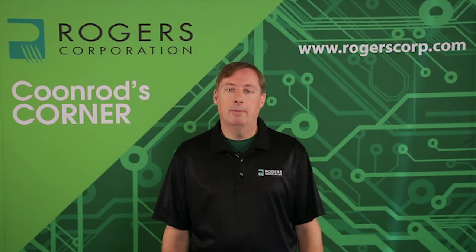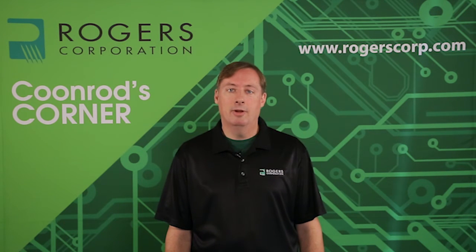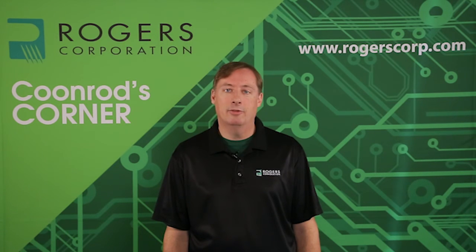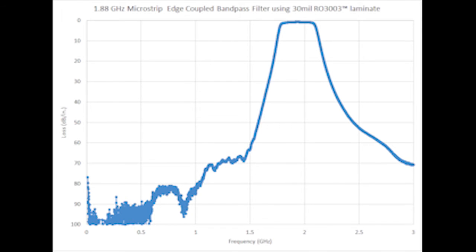Now let's take a look at an edge-coupled microstrip bandpass filter designed to have a center frequency of about 1.88 GHz, with a stop band region from 0 to 1.75 GHz and from about 2.05 GHz on out. In this picture, the stop band is very well-behaved — very high insertion loss on the low-frequency side from 0 Hz to about 1.75–1.8 GHz. Then the pass band region runs from about 1.8 to 2 GHz. Around 2.05–2.09 GHz, the stop band on the high-frequency side kicks in and extends out to 3 GHz in this example. This filter would be very good for applications centered around 1.8–1.9 GHz, and also useful where there's a neighboring application around 3 GHz, because the stop band is so well-behaved in that region.